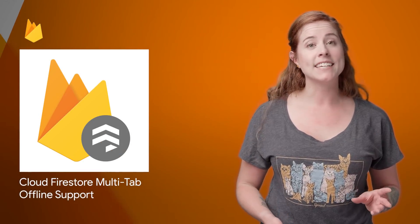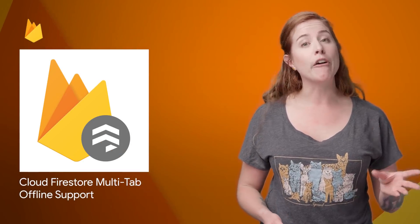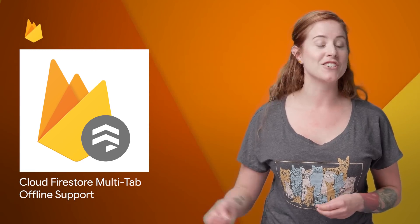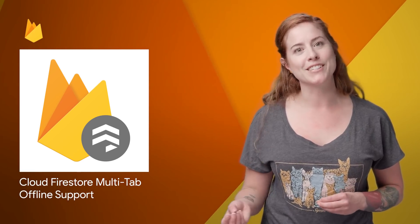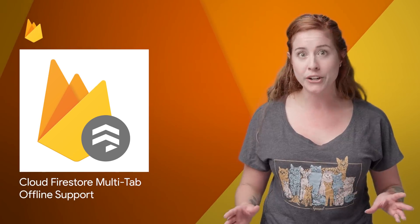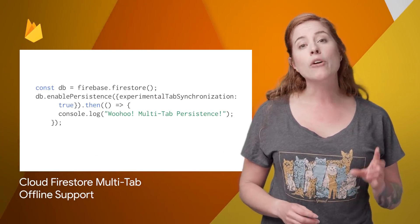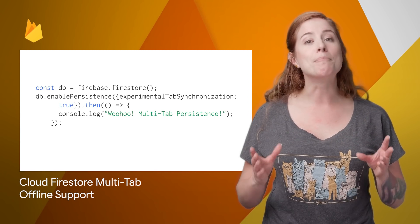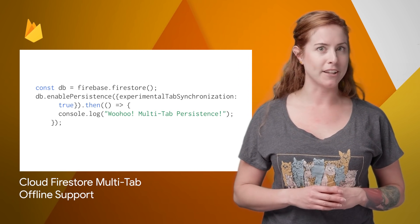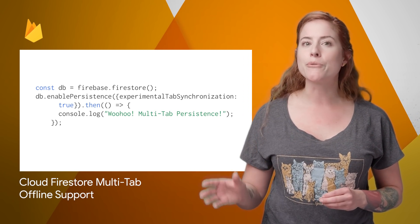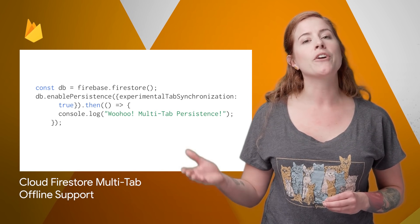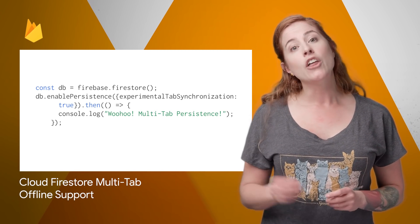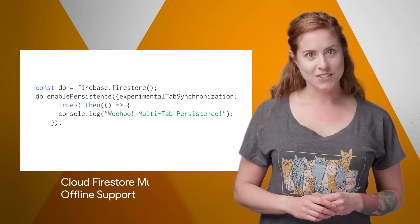The Cloud Firestore SDKs support offline persistence on the web in addition to Android and iOS, managing all your data locally so you can execute advanced queries purely against the local cache. And now the Cloud Firestore Web SDK has multi-tab offline persistence so your users can read and modify their local data even when they open your app in multiple tabs. The code to turn it on is on the post.